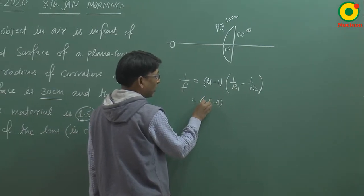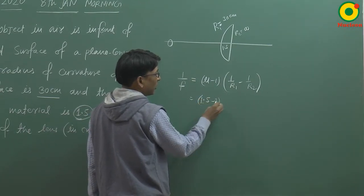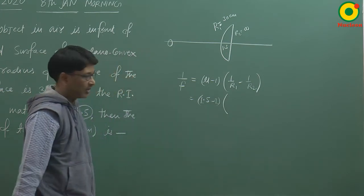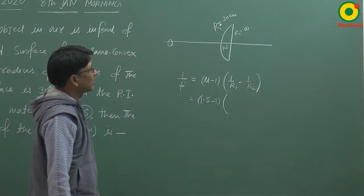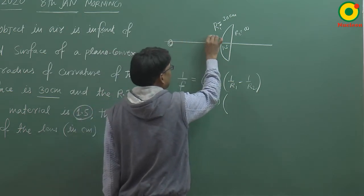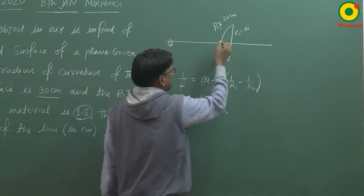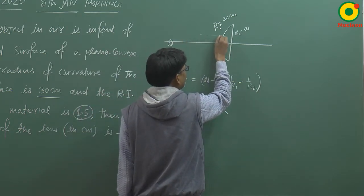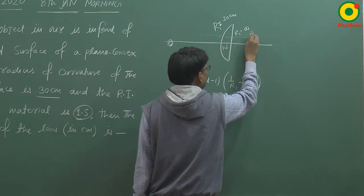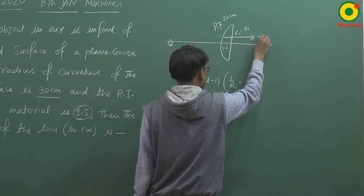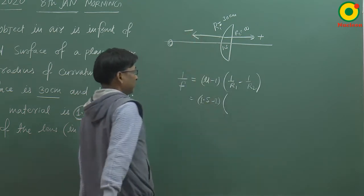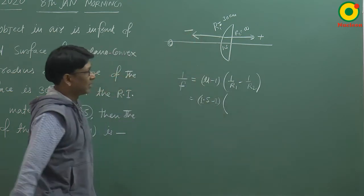अब इसमें R1 और R2 का जो value है वो sign convention के हिसाब से रखा जाता है. Sign convention ऐसे लिया जाता है: light incident direction को हम positive लेते हैं और उसके ultra direction को negative लेते हैं.